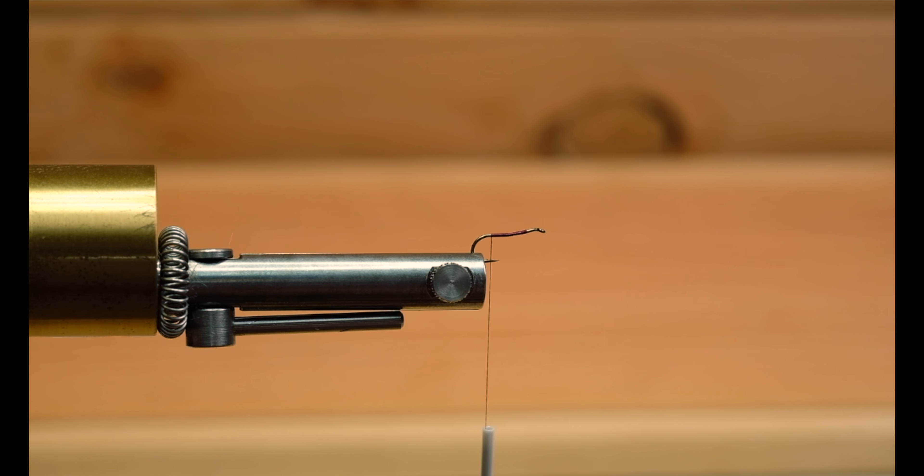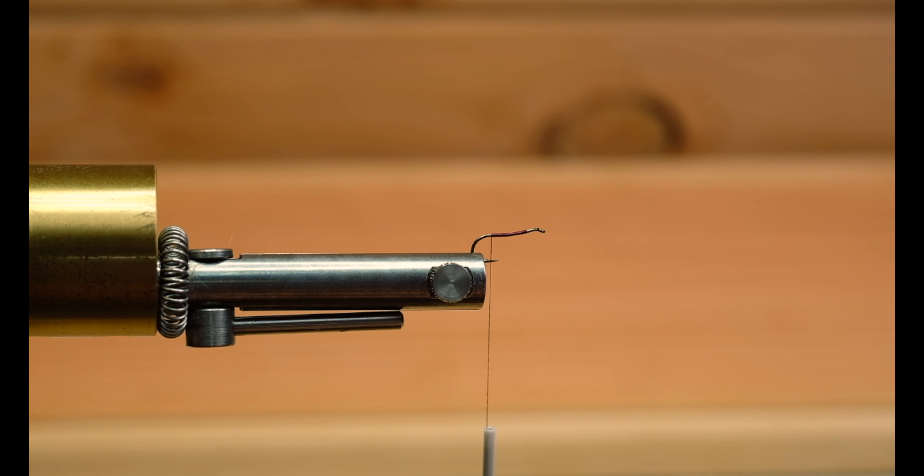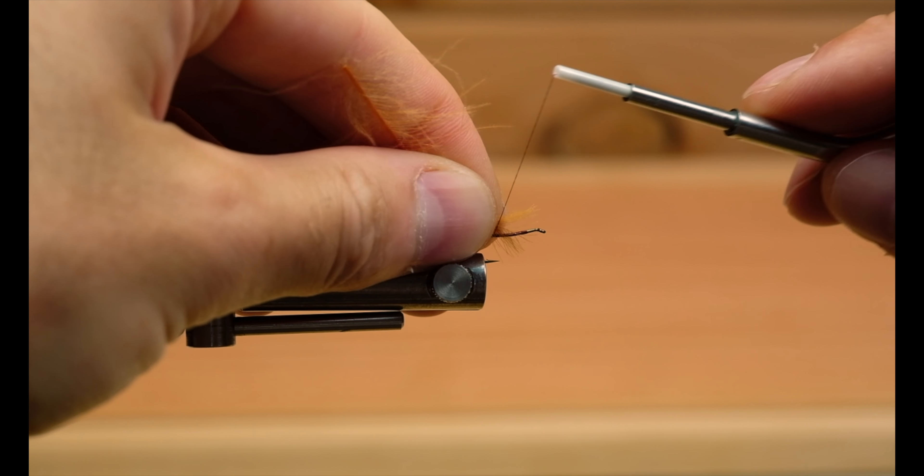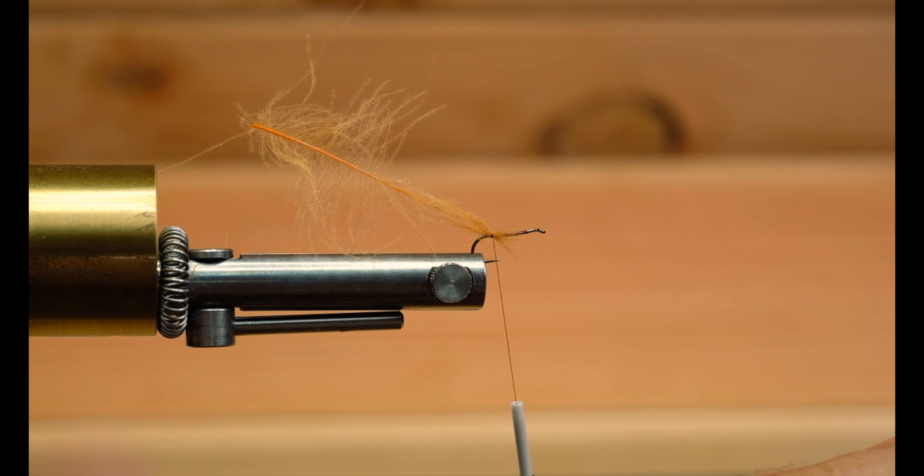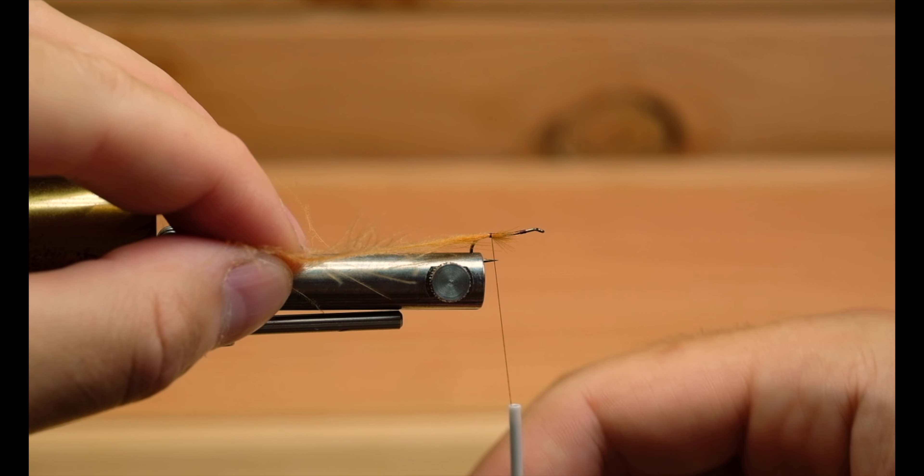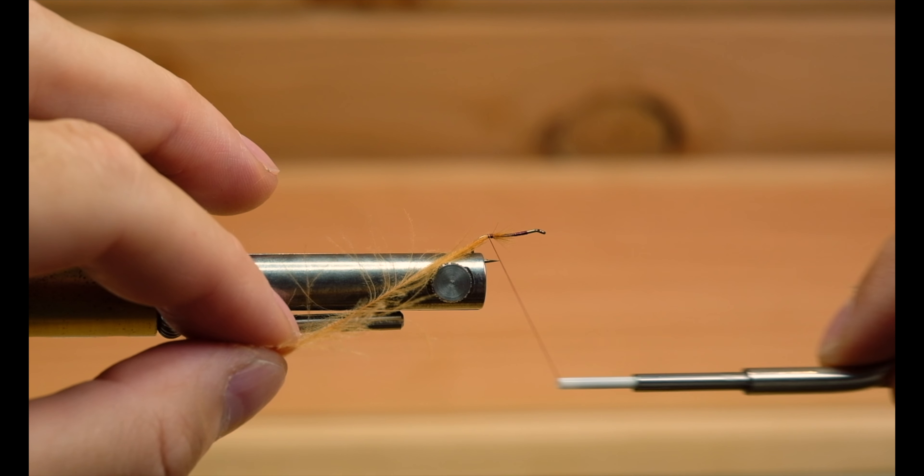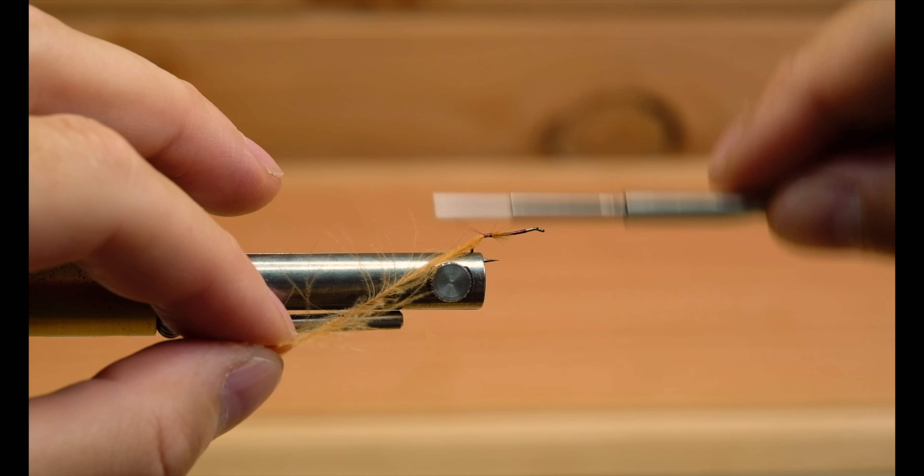The first thing we're gonna use is a CDC feather in a cinnamon color. The very best ones I found for this, which has the nicest color, is the Trout Line Ultra Select CDC. I'll just make two loose wraps, pull it a little, tie it down to the bend.